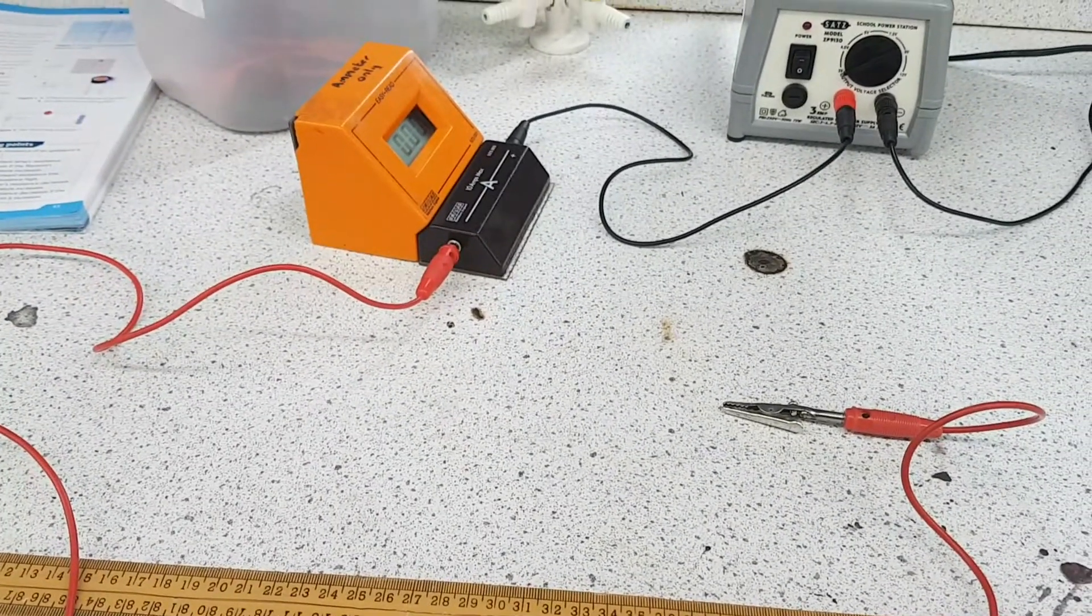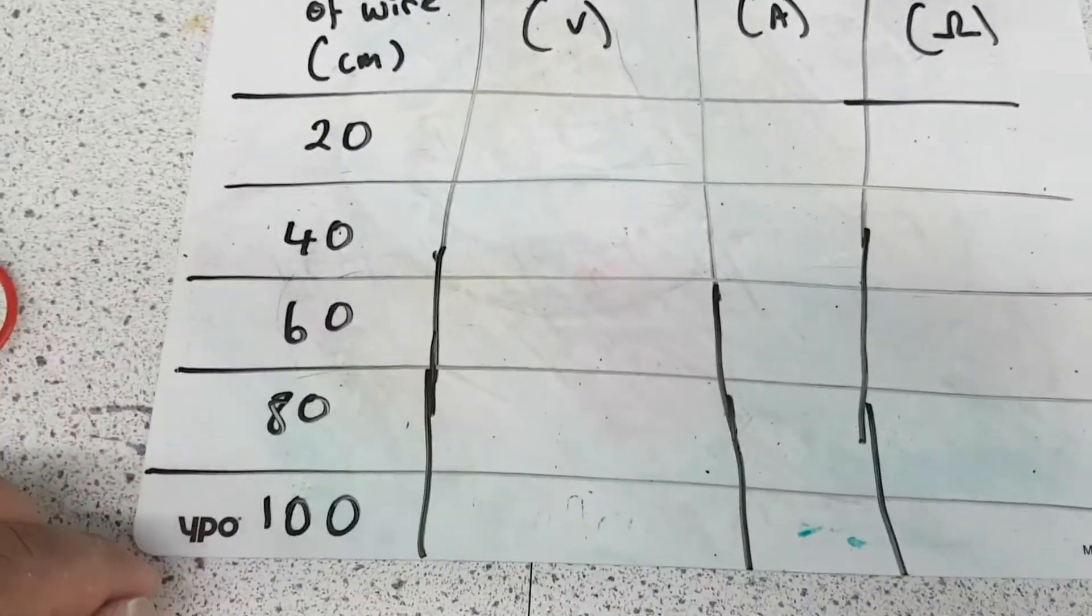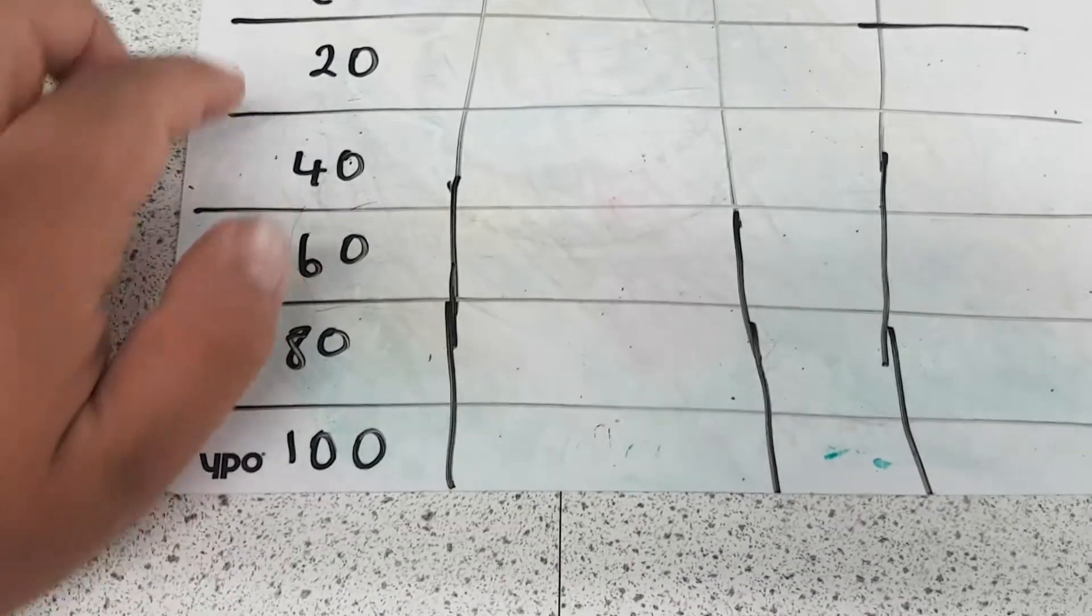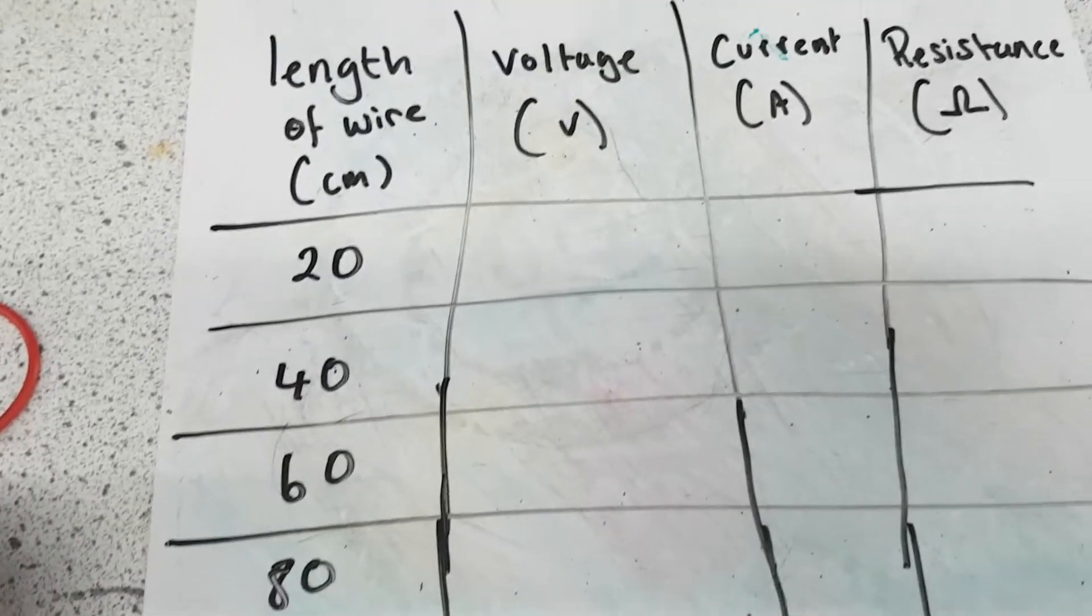Next, I'm going to talk about the table. The table for this experiment would look something like this. So length of wire: 20, 40, 60, 80, up to 100 centimeters. Now, like I said, you could go up in 10. So you could do 10, 20, 30, 40, 50, 60, etc. That's up to you.